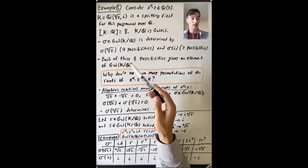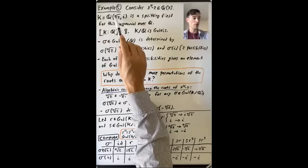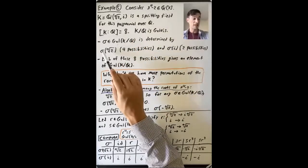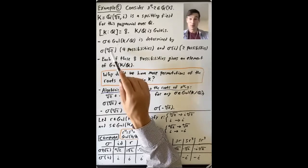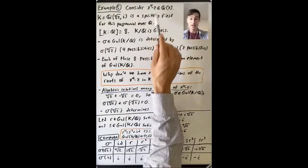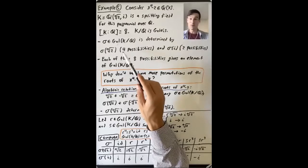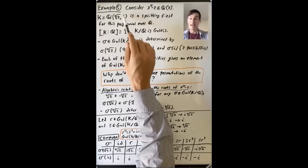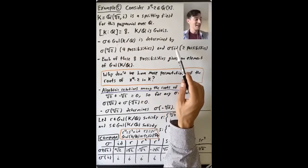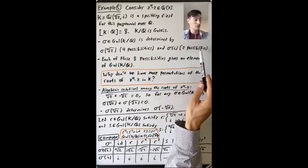How do we describe these elements of the Galois group? If sigma is in the Galois group of K over Q, it's determined by what it does to these two elements. What is sigma of the fourth root of two? Sigma has to send the fourth root of two — one root of x to the fourth minus two in K — to another root of x to the fourth minus two in K. So there are four possibilities. And where sigma sends i: i is a root of the irreducible polynomial x squared plus one, so i goes to i or negative i — two possibilities.